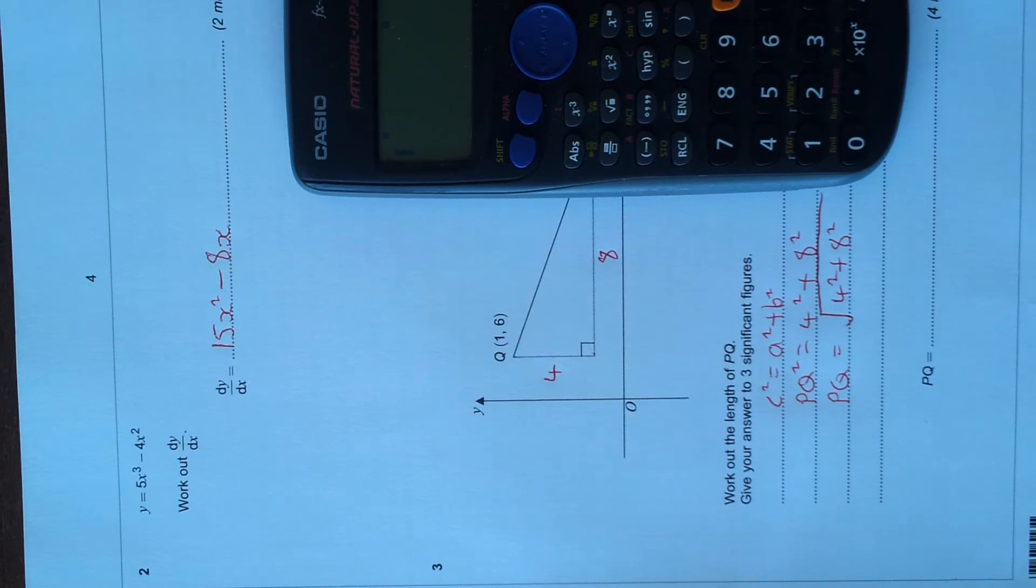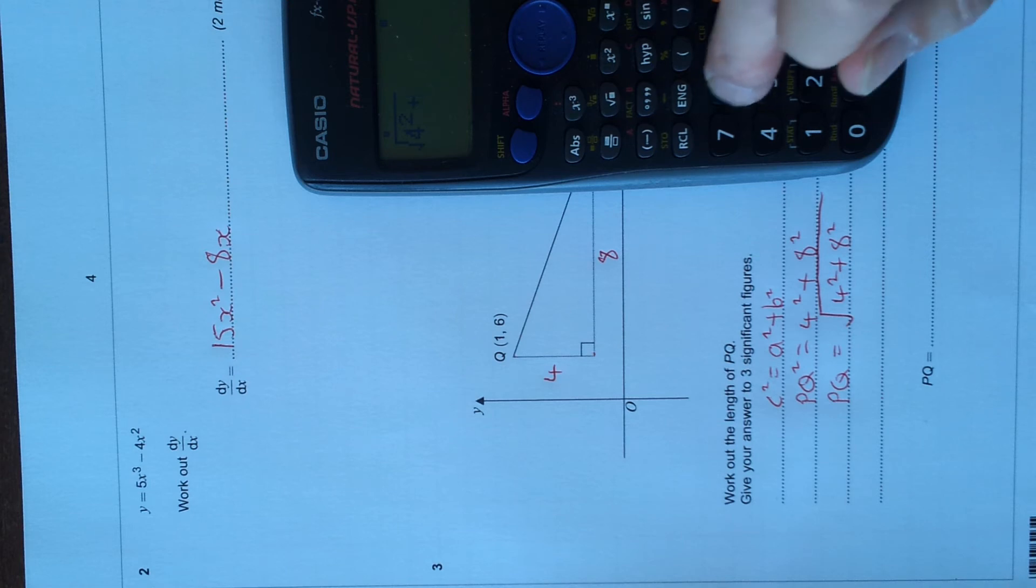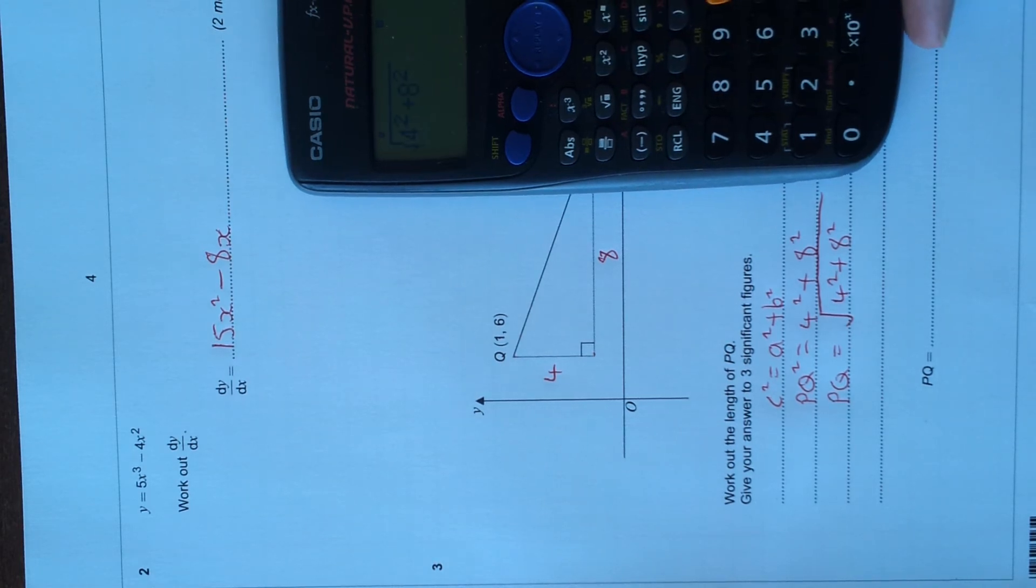Let's have a look. Square root, 4² plus 8² equals 4 root 5, which is an exact answer.